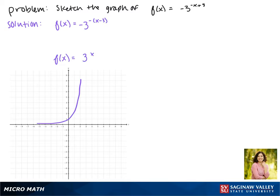We'll start with the graph of 3 to the x. Notice that it passes through the point. Now we'll start transforming our parent function with reflections. This negative out front means a reflection across the x-axis.